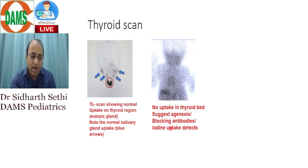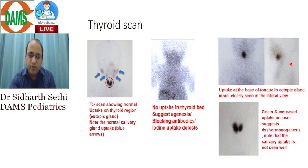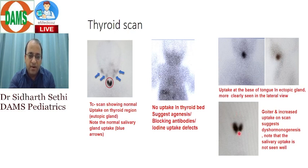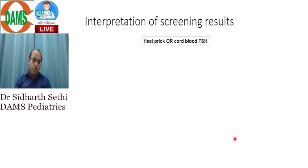You may see uptake at the base of the tongue on the lateral or AP view. A goiter with increased uptake suggests dyshormogenesis — here you can see no salivary uptake and increased uptake in the thyroid gland. Now let me explain our protocol: whenever a baby is born, all over the world we do a TSH first. Neonatal screening is a very important topic — read about it from the class notes.